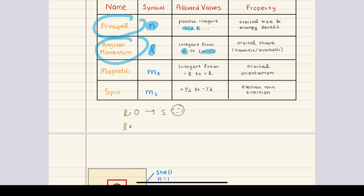When l equals one, the subshell is the p subshell, which is dumbbell shaped. When l is equal to two, the subshell is the d subshell, which has cloverleaf-like shapes. And when l is equal to three, the subshell is the f subshell, which has very complex shapes. So the principal quantum number n tells us the shell, and the angular momentum quantum number l tells us the subshells that exist within that shell.